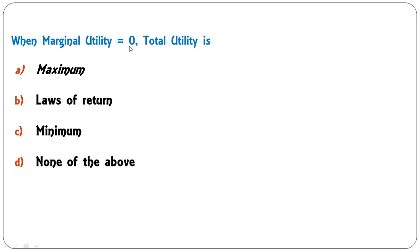Next: 'When marginal utility is equal to zero, total utility is' — maximum, law of returns, minimum, or none of the above? When marginal utility is zero, total utility is maximum. A is the correct answer.